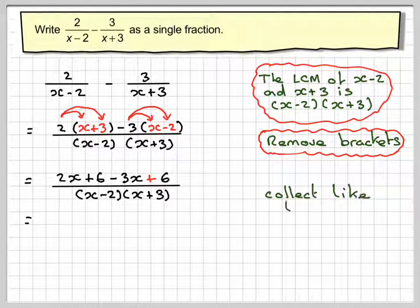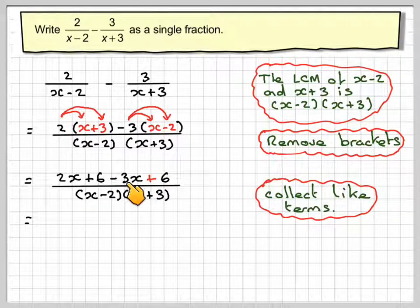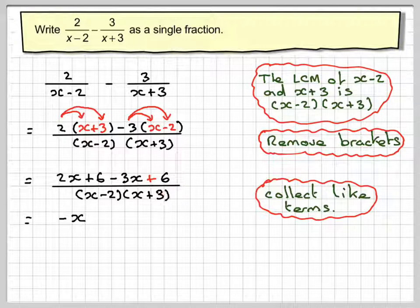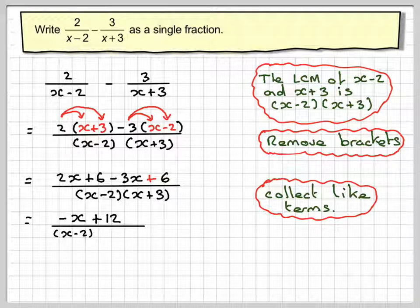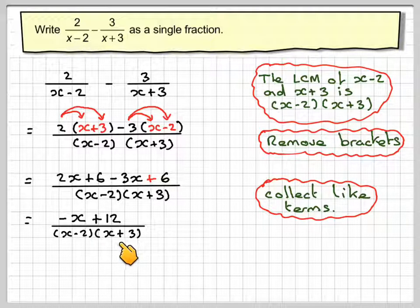Then we're going to collect together like terms. So we're going to have 2x minus 3x, which gives me minus x, minus 1x, and 6 plus 6 gives me 12. And we'll leave the denominator like that. We don't go over to expand the denominator.